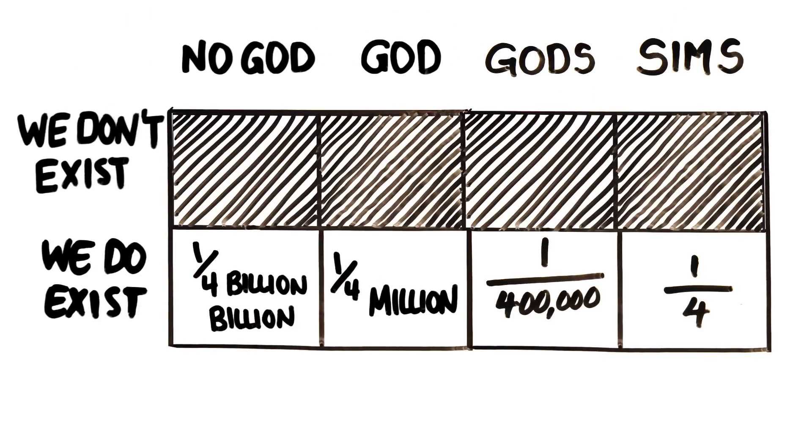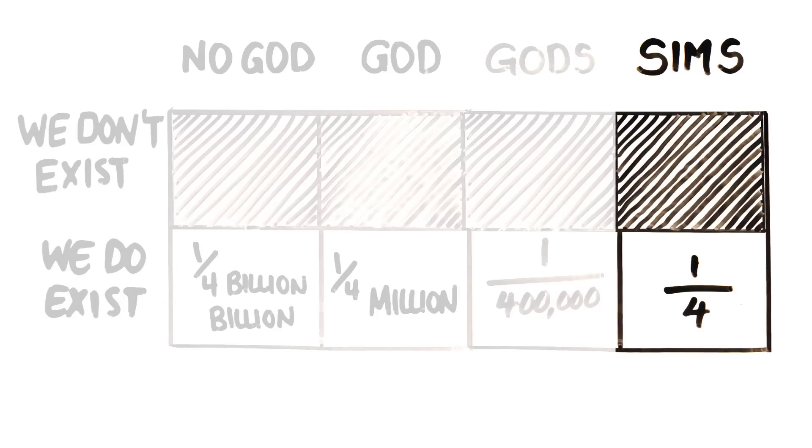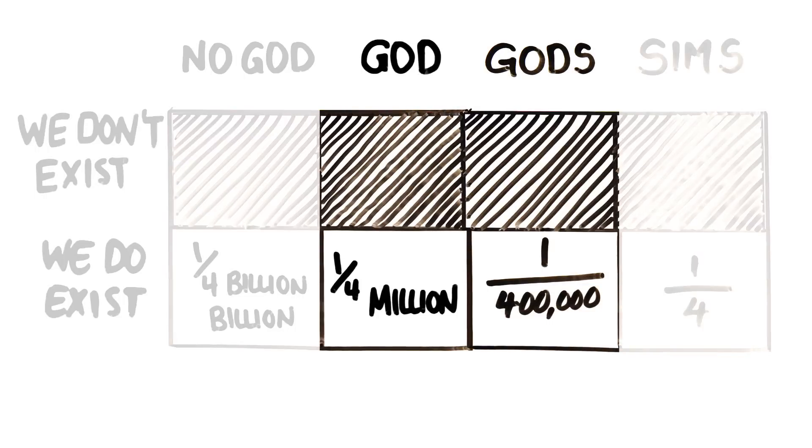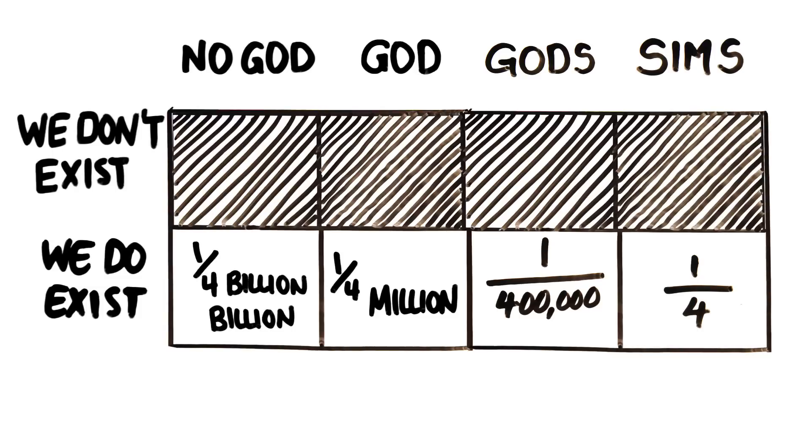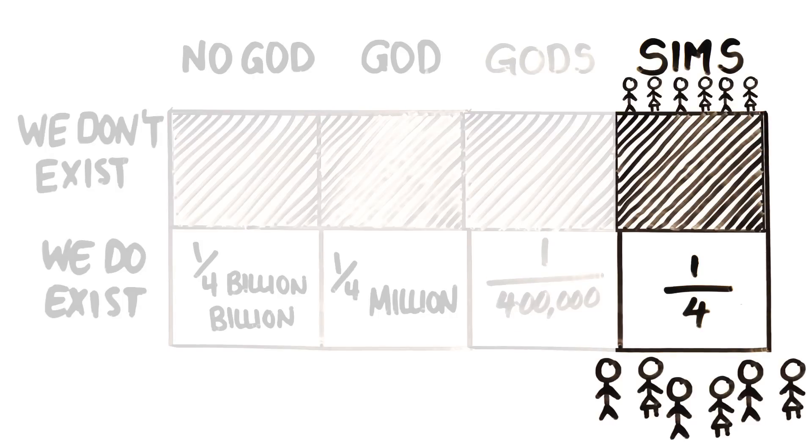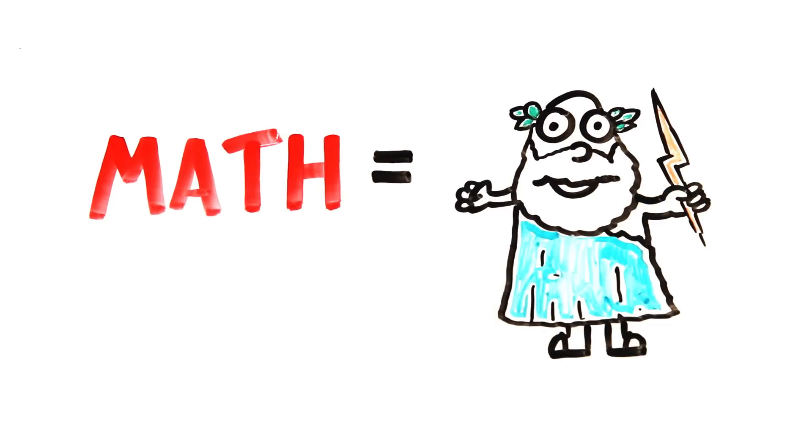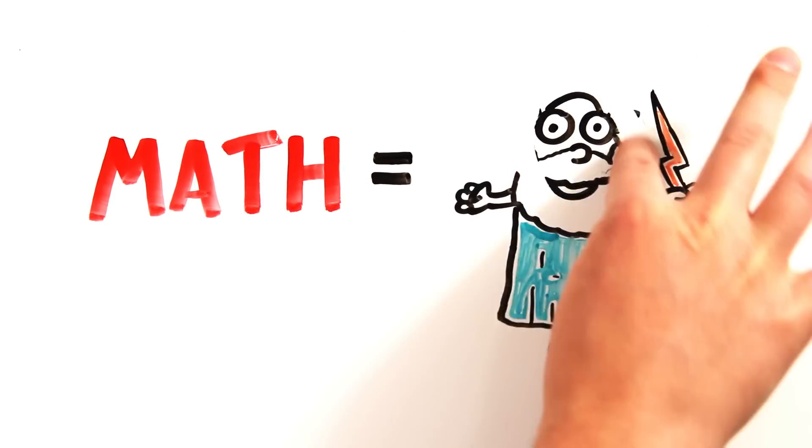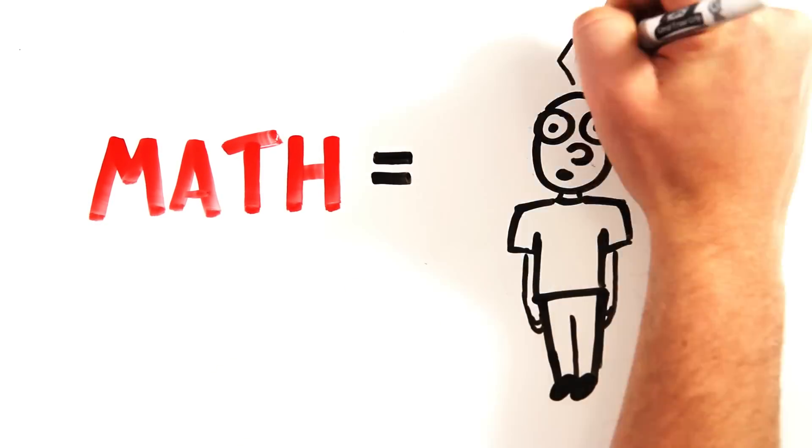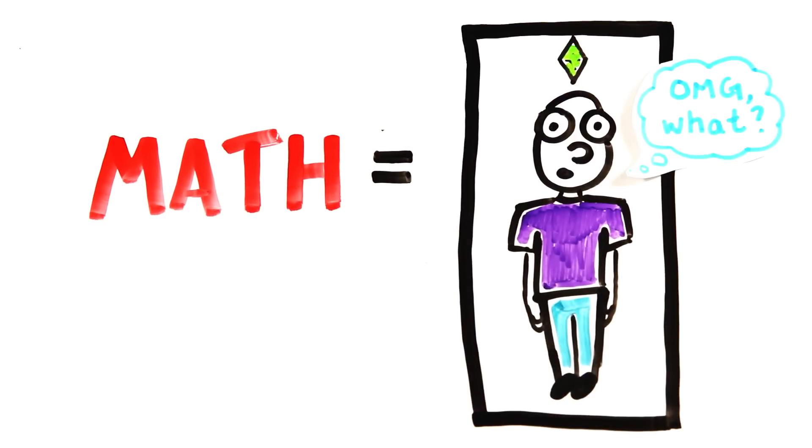Again, the exact number doesn't matter, just that we can agree it's very likely that advanced humans would create these kinds of simulations compared to the probability of a god or gods randomly deciding to make humans when they don't need to or could make millions of other animals or other aspects of the universe. After all, humanity is obsessed with humans. So as you can see, while math can in fact show that the existence of life is evidence that God exists compared to no God, the same math shows more compelling evidence that we're a simulation by much smarter people.